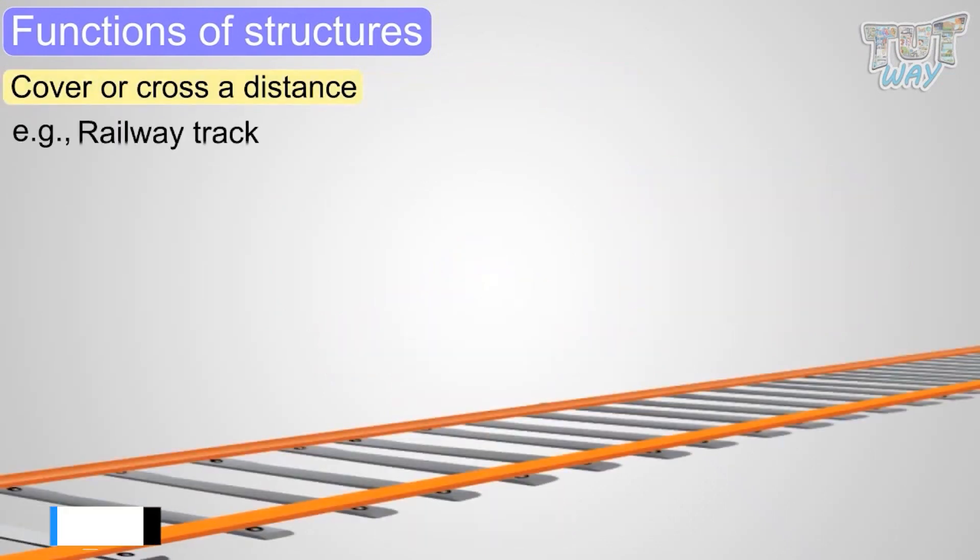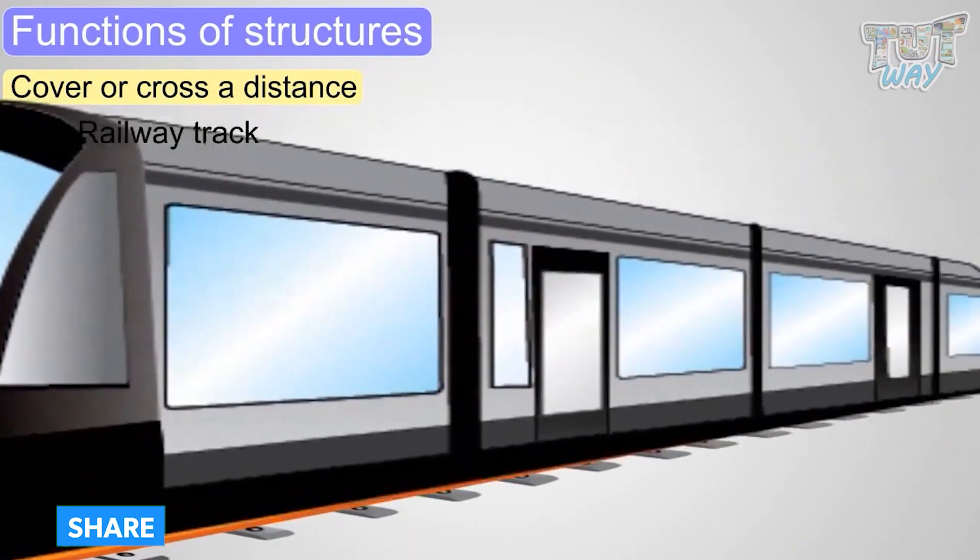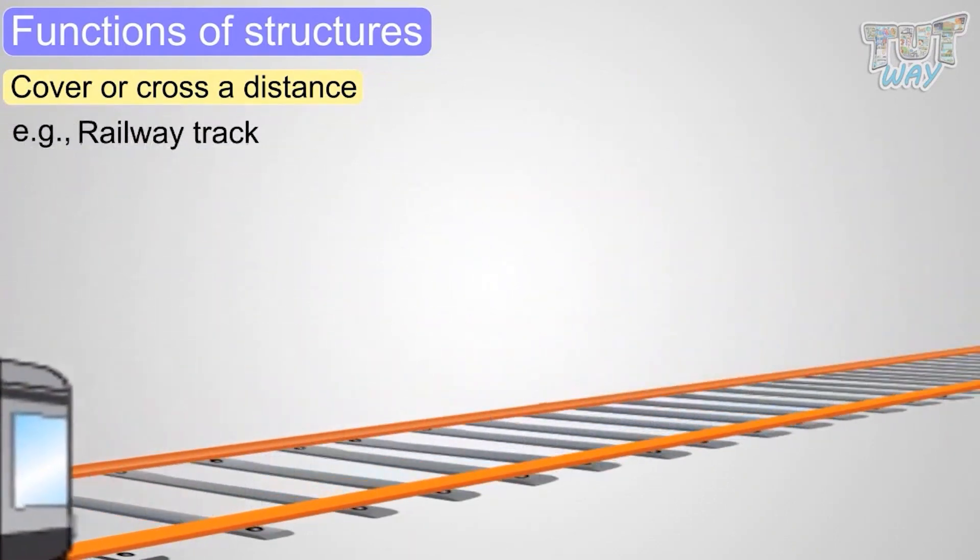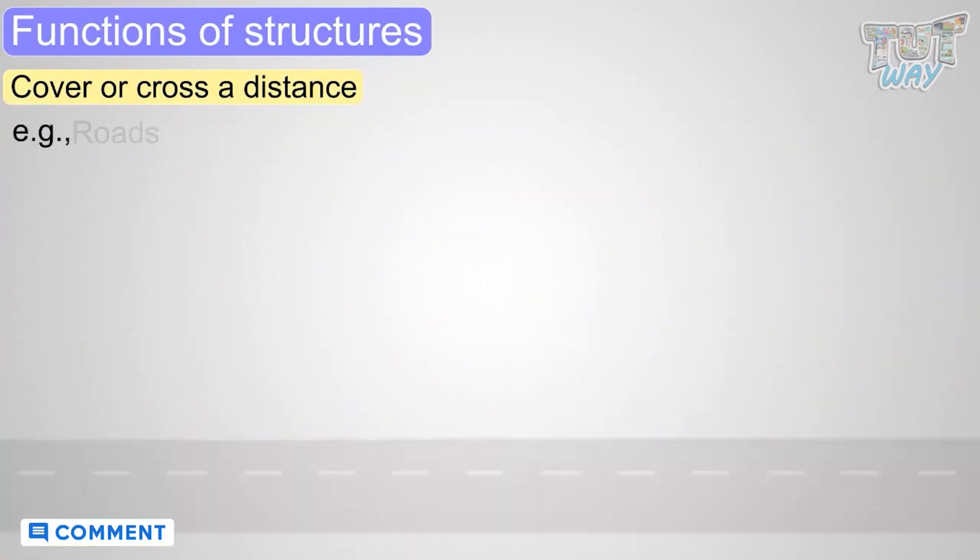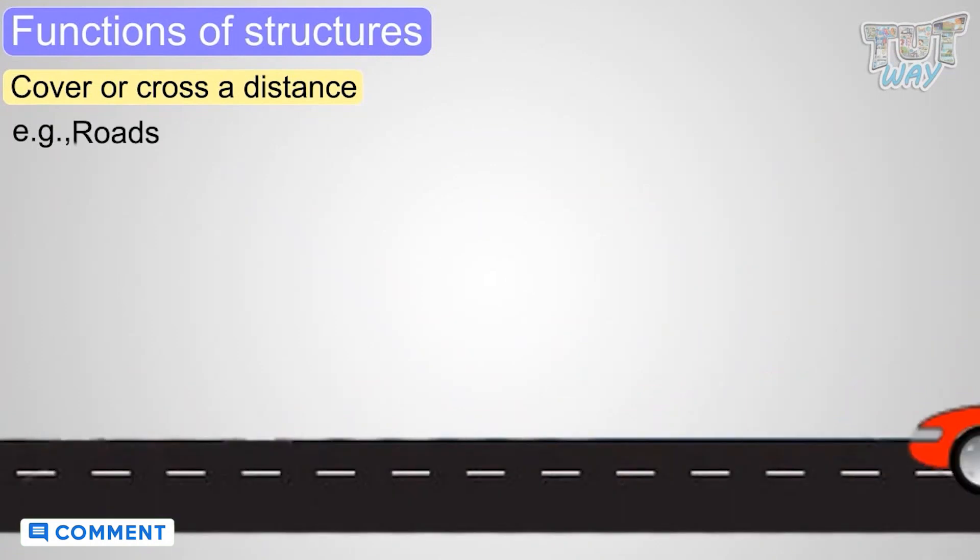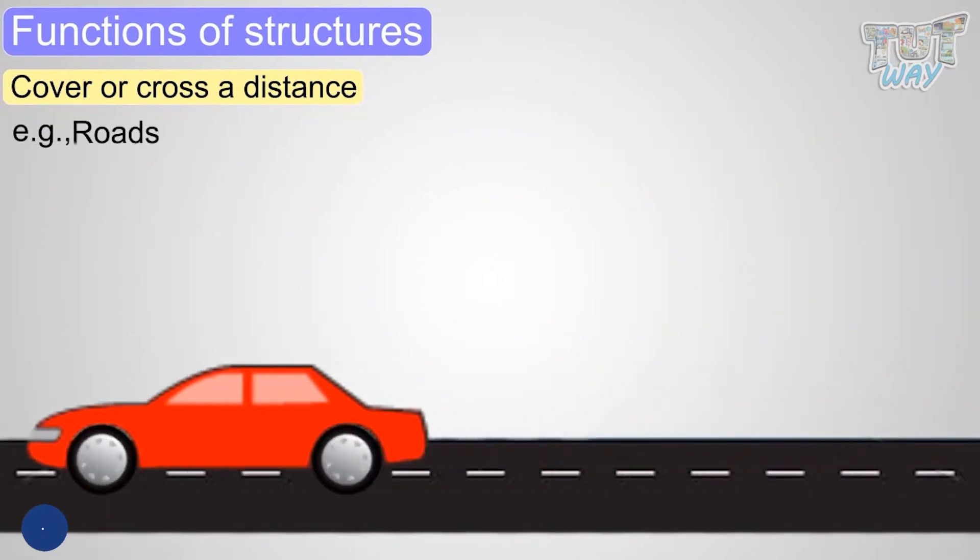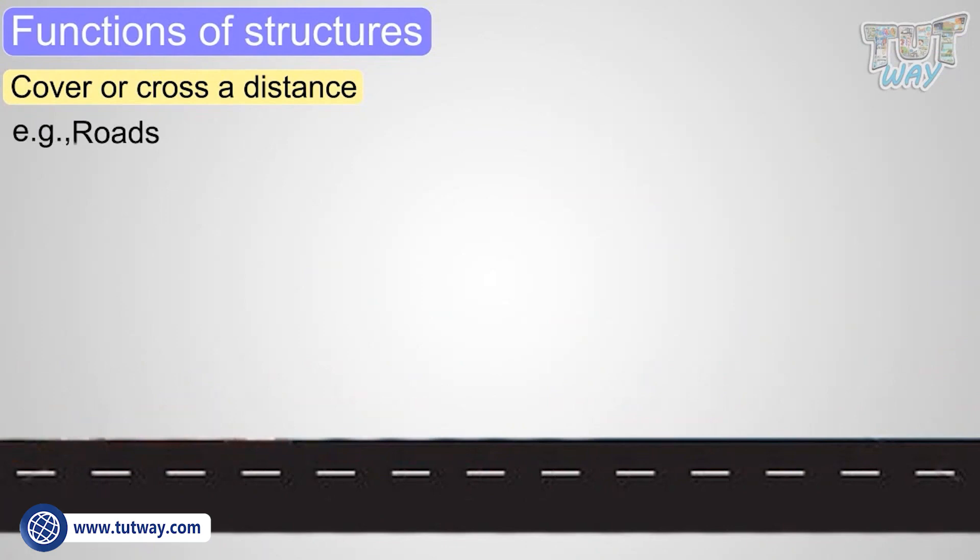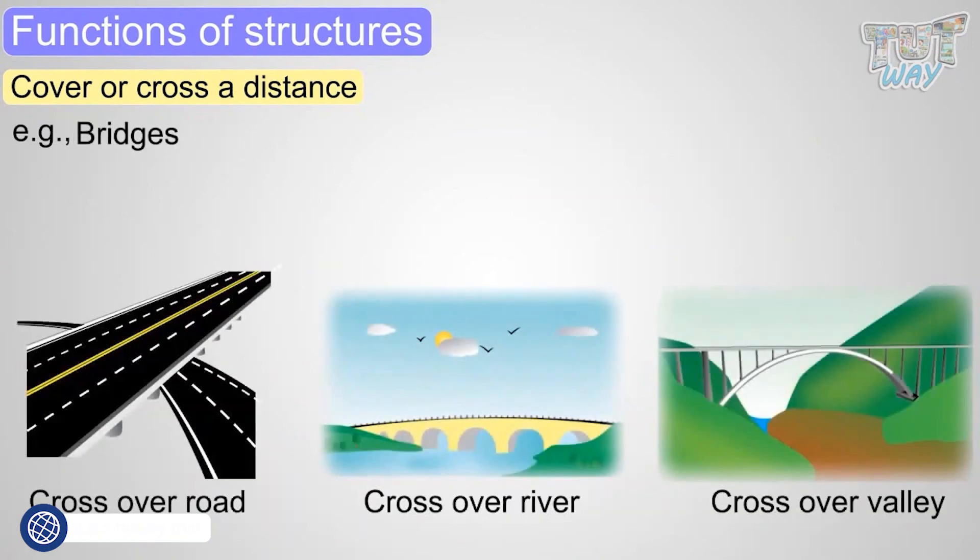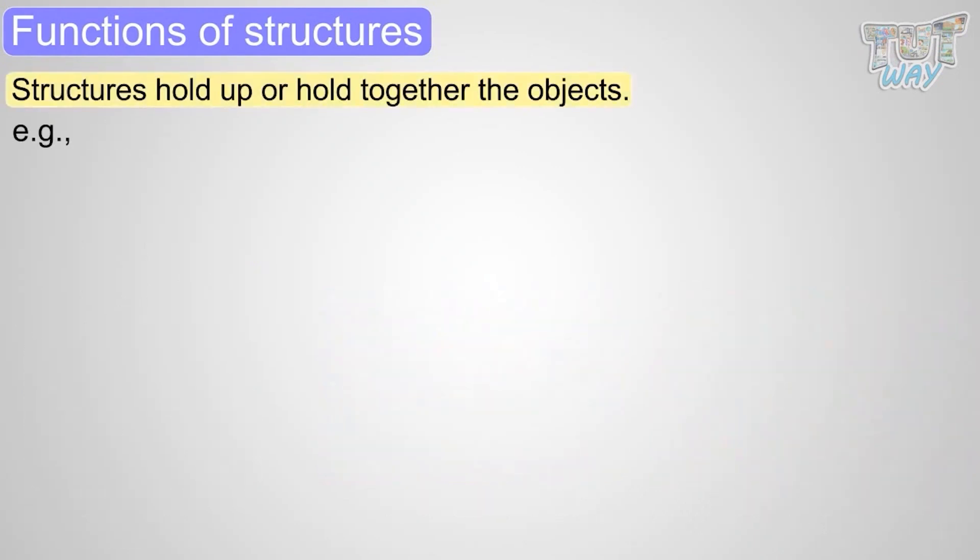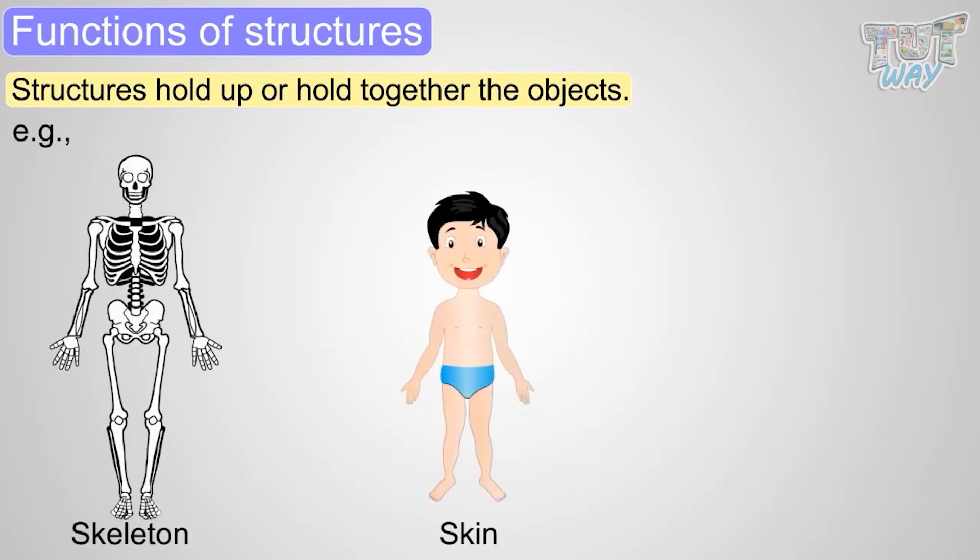Railway track is a structure that helps the train to move on it to cover distance. Roads are structures on which vehicles can move to cover the distance. Bridges are structures that help to cross over a river or a steep valley. So, we learned that structures hold up or hold together the objects like skeleton, skin, and hanger.